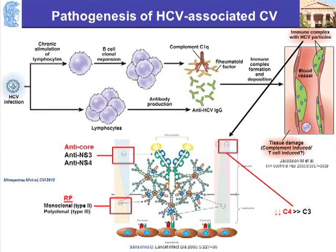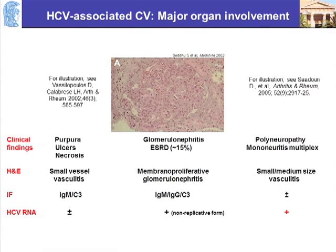The three main target organs: in the skin, you can get purpura, ulcers, or necrosis. In the kidney, you get membranoproliferative glomerulonephritis — about 15% of these patients go on to develop end-stage renal disease. The nerves are a target causing either polyneuropathy, usually sensory polyneuropathy, or mononeuritis multiplex. Sometimes you can find the virus in these target organs, and sometimes you cannot.